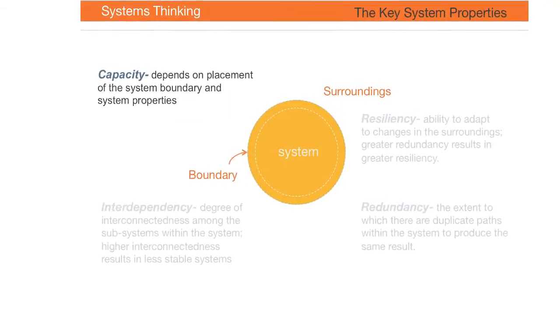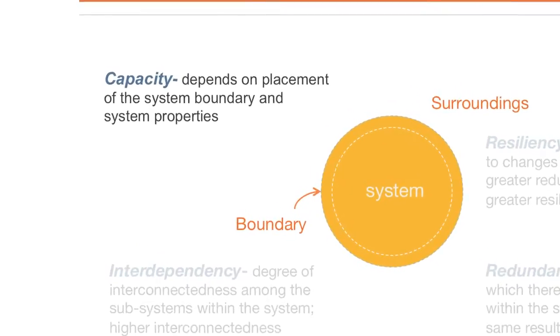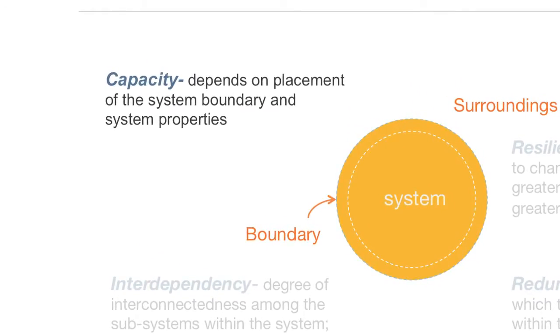The capacity of the system depends on where the system boundary is placed. It also depends on the properties of the system itself. The capacity refers to the productivity of the system.